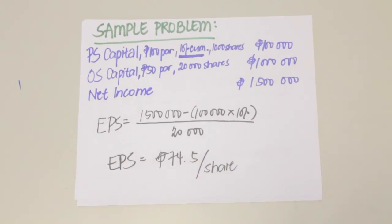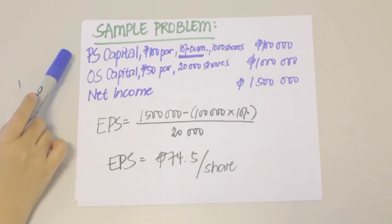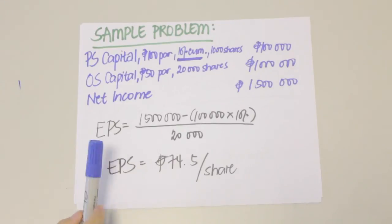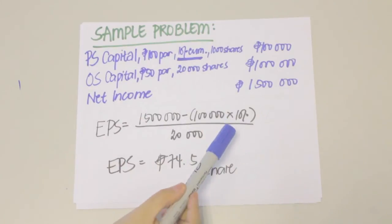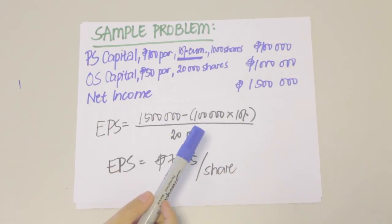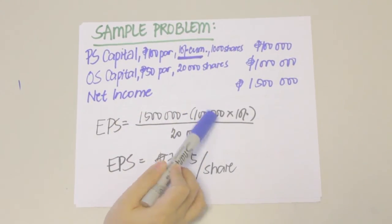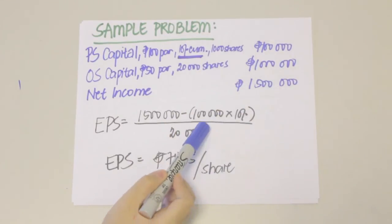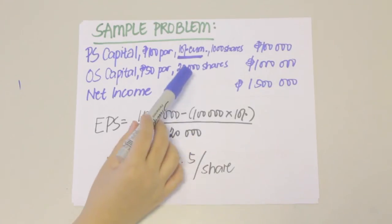Let's apply the formula in this problem. Given: preference share capital of 100,000, ordinary share capital of 1,000,000, and net income of 1,500,000. When computing for EPS considering that your preference shares are cumulative, we need to deduct the dividends attributable to the preference shares whether there is a declaration or not. The numerator equals 1,500,000 net income less the preference dividends, which we get by multiplying the 10% rate of return by the total capital of 100,000. Divide by 20,000 outstanding ordinary shares, giving an EPS of 74.5 pesos per share.